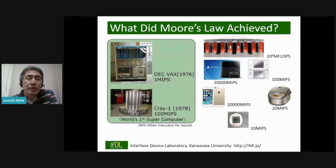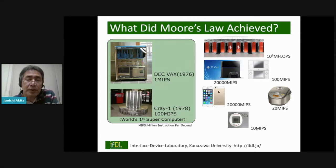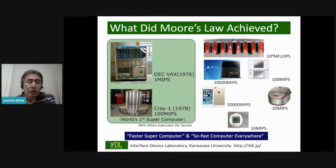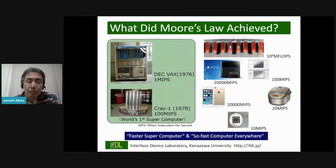Next, let me review what Moore's Law has achieved. One result is the increase of computing power of supercomputers and so on. But there is another aspect of the computing paradigm in Moore's Law: the spreading of computer applications such as gaming computers, smartphones, home appliances, and gadgets. So there are two faces of Moore's Law — one is faster computing, and the other is computers spreading everywhere.